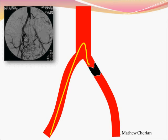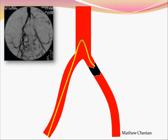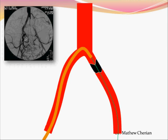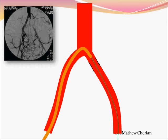You would use a wire like the angle thermo wire to cross the lesion. Once you have crossed it, you'll take your catheter across, change that for an extra stiff wire, then have your crossover sheath or your guiding catheter across, and pre-dilate the lesion.